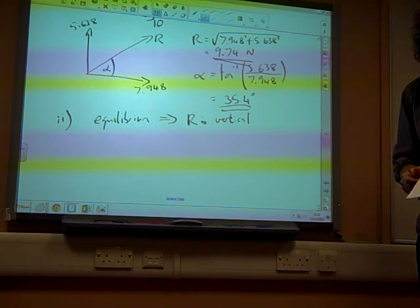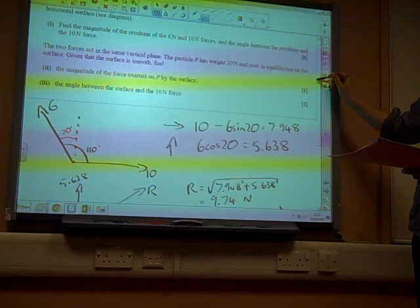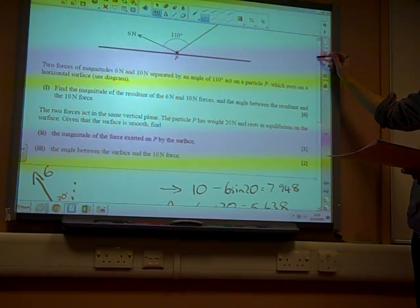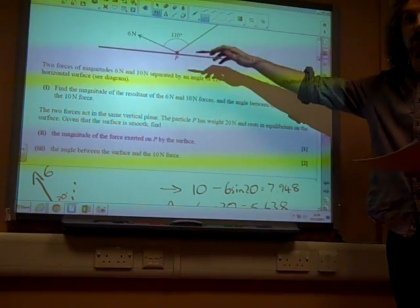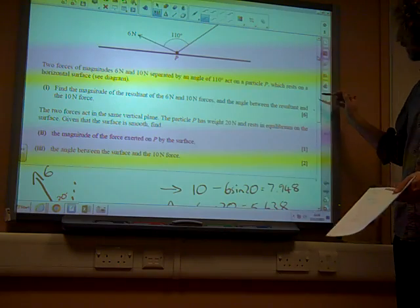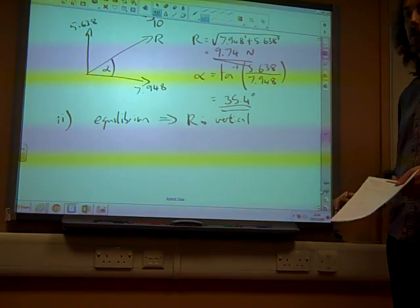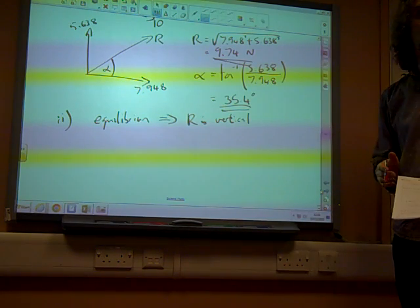So, if we think of the forces that we've got, we've got a normal contact force between the two forces in the plane. We've got the resultant of these two forces, and we've got the weight. They're the only forces acting. And all three of those forces are in the same vertical direction, because it's in equilibrium. It's not moving side to side.